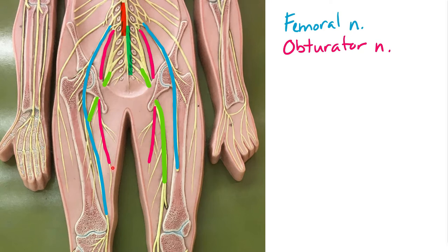You are also responsible for the inferior and superior gluteal nerves that come from the sacral plexus; however, those are not visible on this specific model. By process of elimination, the green nerve you can see is the sciatic nerve, which is the only sacral plexus nerve you need to identify on the flatman.